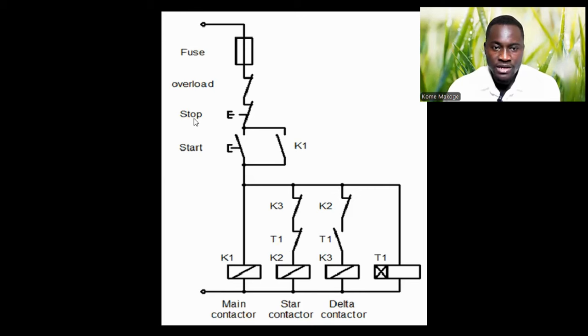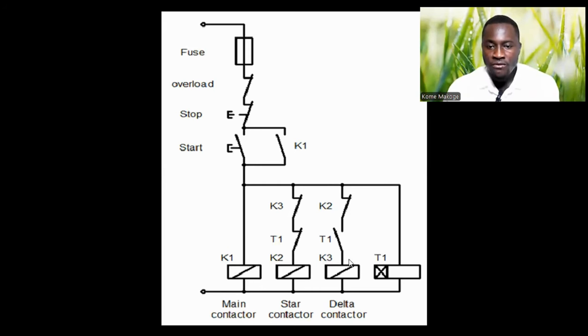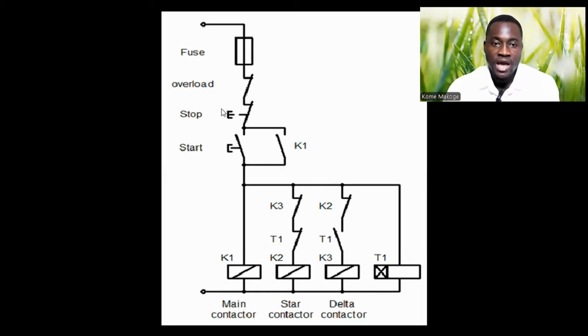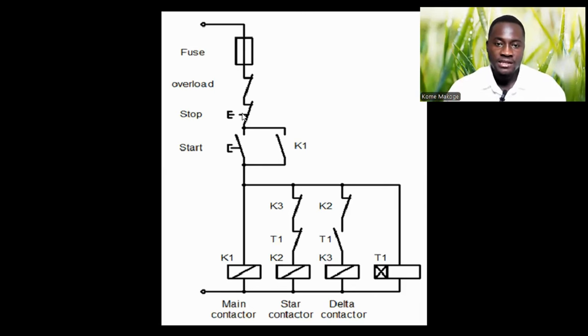When you press the stop push button, it prevents current from flowing down, so all the contactor coils are going to de-energize. K1, the main contactor, will de-energize. The delta contactor, which was energized, will also be de-energized. The timer coil will also de-energize because the stop push button has been pressed. This is how the Star Delta Starter functions. Understanding how the control system works allows us to carry out maintenance on site, do troubleshooting, and get our motor functioning correctly — which is very important.